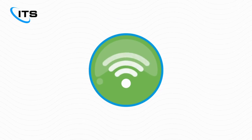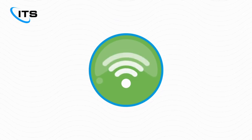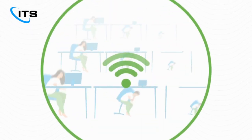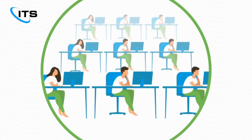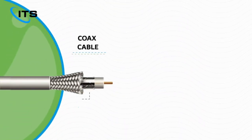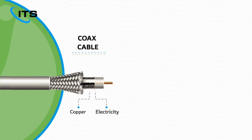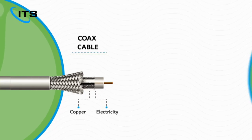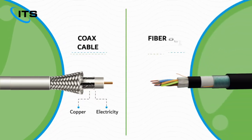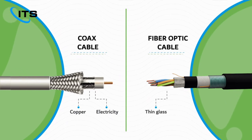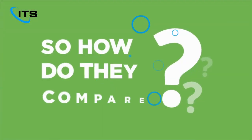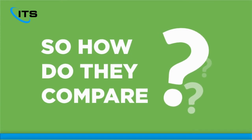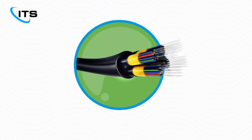The technology environment of today requires fast, responsive internet, and the type of connection you choose has a massive impact on your employees' productivity. Coax cable consists of copper and uses electricity to transport internet data. Fiber optic cable consists of thin glass fibers that use light to transport data.